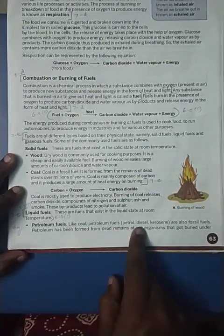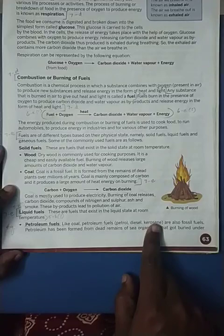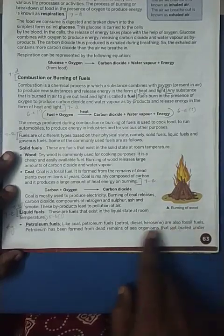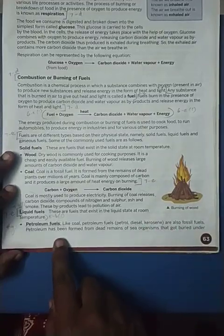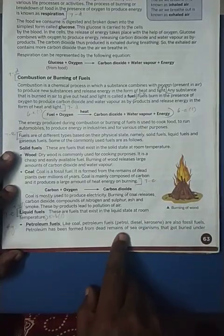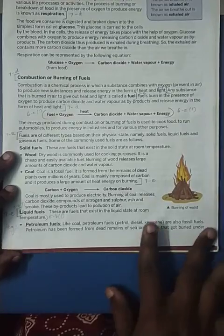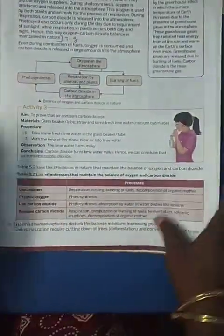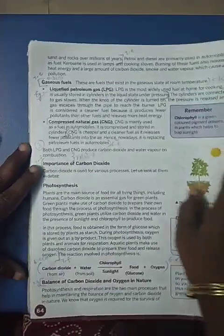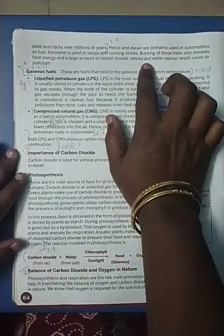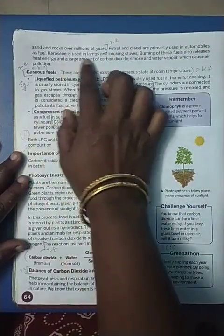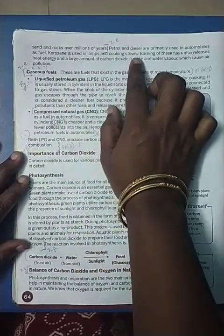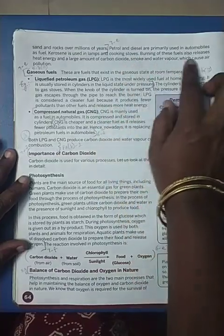Petroleum fuels like petrol, diesel, and kerosene are also fossil fuels, obtained from the dead remains of sea organisms buried under the earth millions of years ago. Petrol and diesel are mainly used in automobiles, while kerosene is used in lamps and cooking stoves, giving a large amount of heat energy.